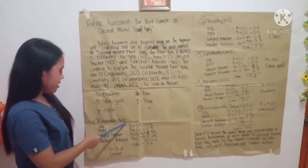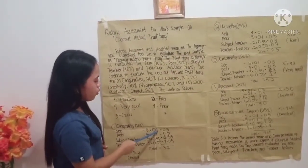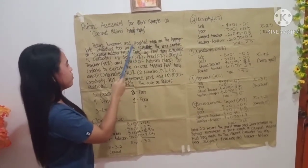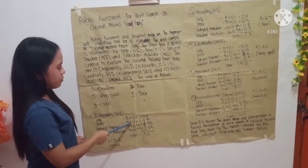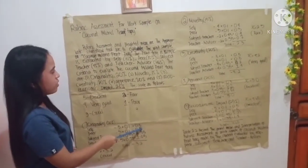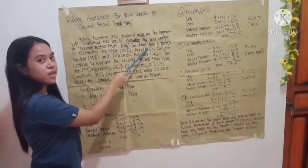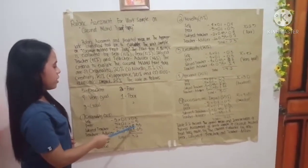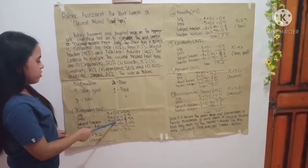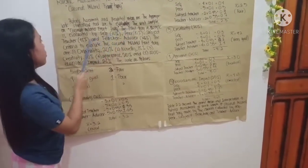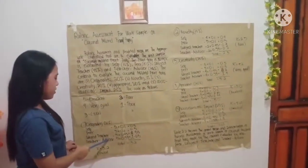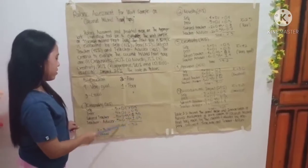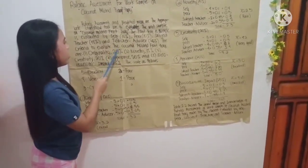For originality, 20%: Self is equal to 5 times 0.1, which equals 0.5. To get the 0.1, you need to divide 10% by 100. Peer: 3 times 0.1 equals 0.3, and to get 0.1, divide 10% by 100. Subject teacher: 3 times 0.45 equals 1.35; to get 0.45, divide 45 by 100. Teacher advisor: 3 times 0.35 equals 1.05; to get 0.35, divide 35 by 100.